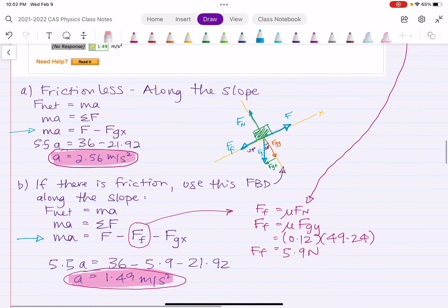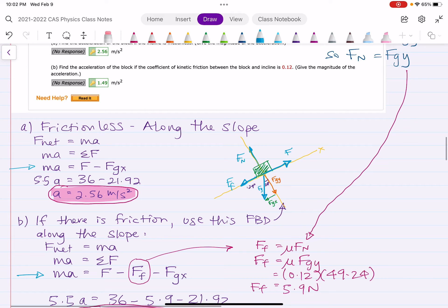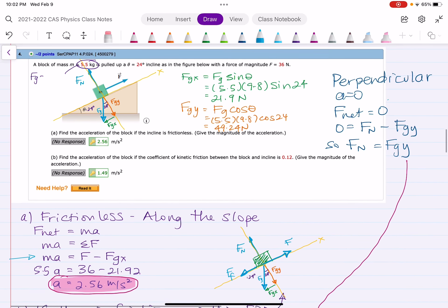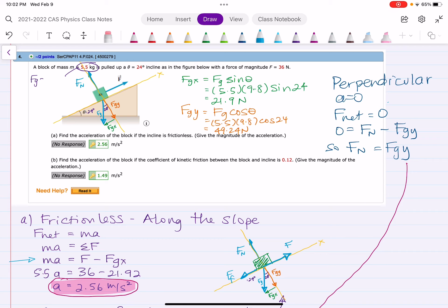How do we find FN? Well, now we have to look, since FN is perpendicular to the slope, we have to look at perpendicular. And remember, perpendicular, A is 0. It's not floating off the slope. It's not smashing into the slope. So its acceleration in the perpendicular direction is 0. So the net forces are 0. And therefore, the only two forces, FN and FGY, have to be equal to each other.